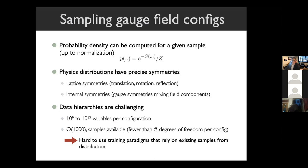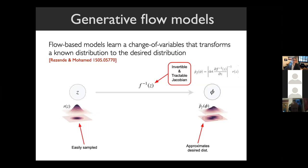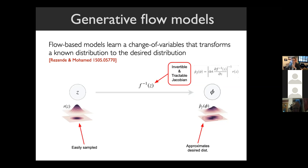To summarize the sampling problem: we have a known probability density that can be computed up to normalization for a given sample, precise symmetries that need encoding, and challenging data hierarchies — 10^9 to 10^12 variables per configuration, but only thousands of samples. We can't use any training paradigms that rely on existing samples from our distribution. One approach to this problem is flow-based models — essentially a change of variables. You optimize a complicated function to give you a change of variables between a probability distribution that's easy to sample and the distribution of interest. If you can find such an invertible function with a tractable Jacobian, you can make sampling exact via a Metropolis-Hastings accept-reject step or reweighting methods.